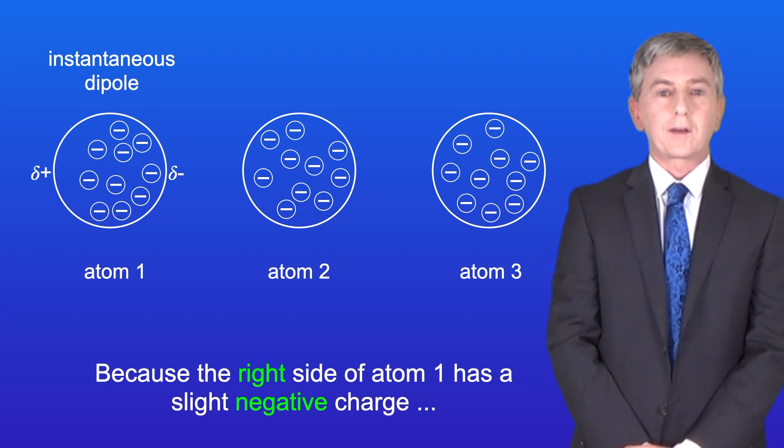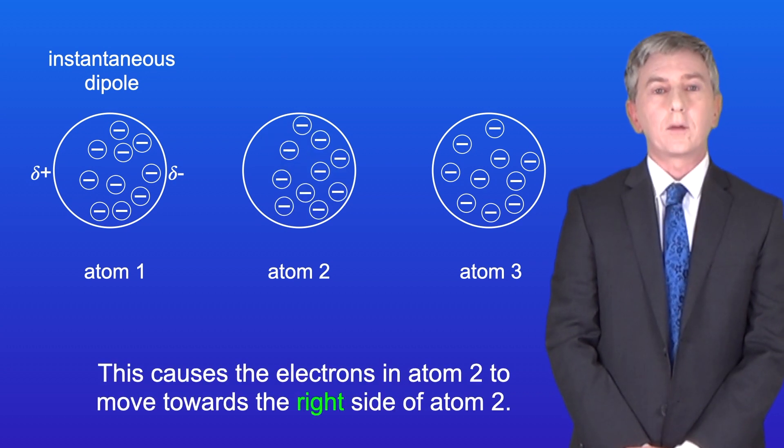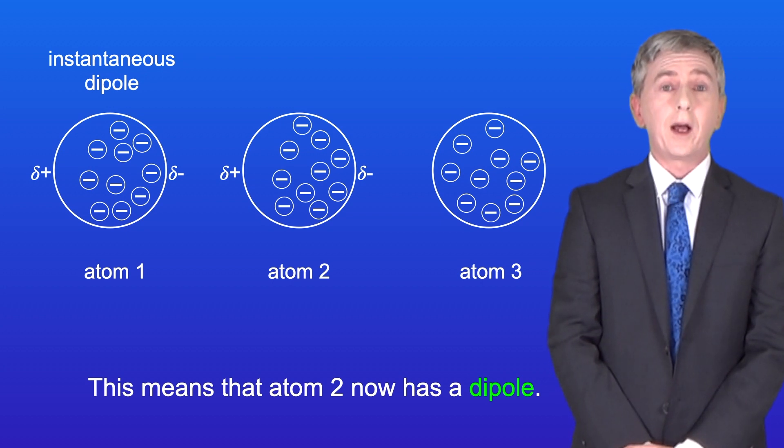Now because the right side of atom one has a slight negative charge, this repels the electrons in atom two. This causes the electrons in atom two to move towards the right side of atom two, and this means that atom two now has a dipole.